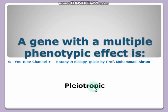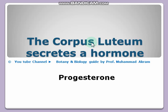A gene with multiple phenotypic effects is known as a pleiotropic gene, and this phenomenon is known as pleiotropy. If a single gene controls multiple traits, this phenomenon is called pleiotropy and the gene is termed a pleiotropic gene.